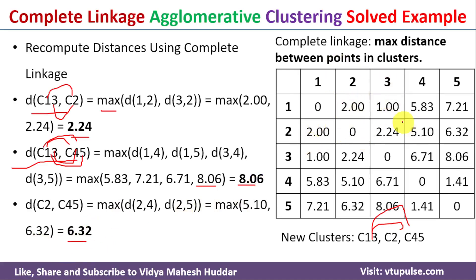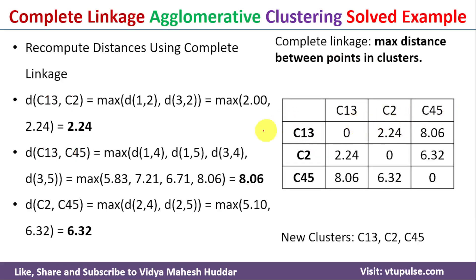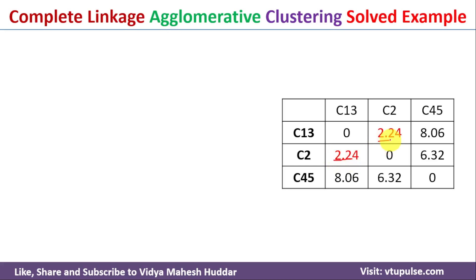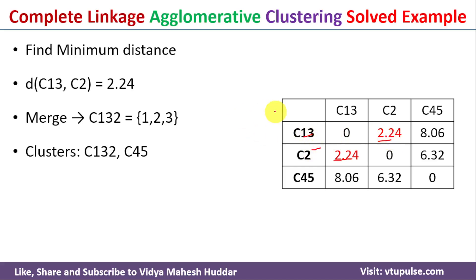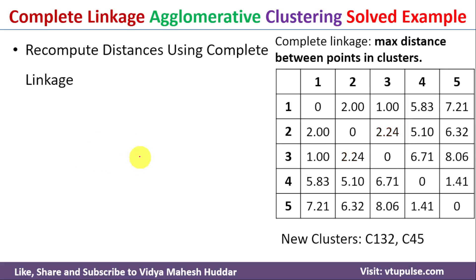After updating the table with the new distances, we find the minimum value is 2.24, which is between clusters C13 and C2. So we merge C13 and C2 to get the new cluster C132. The remaining clusters are now C132 and C45, and we again recompute the distance using complete linkage.